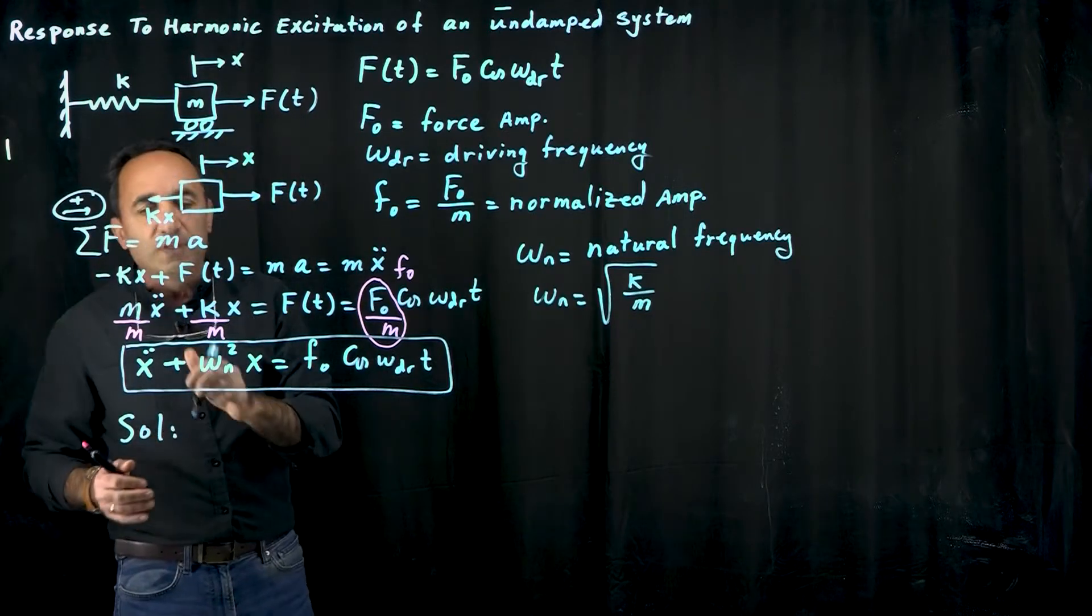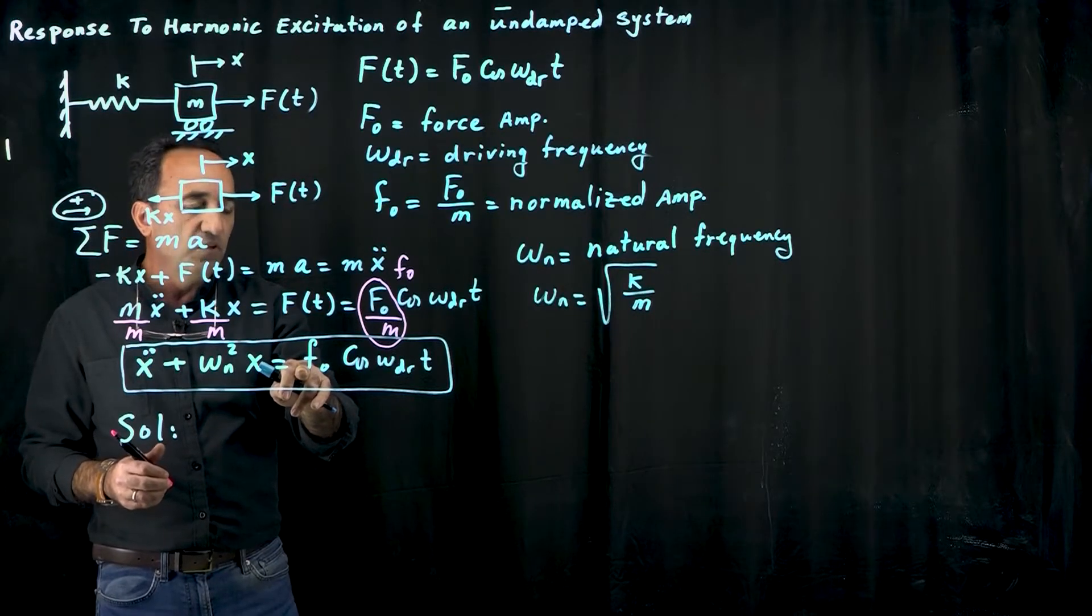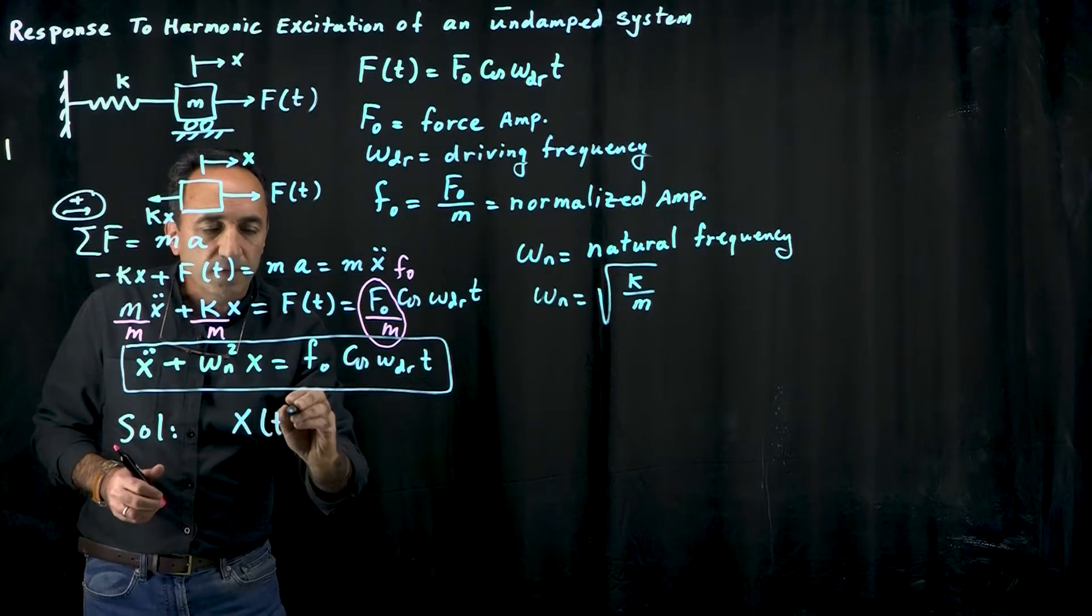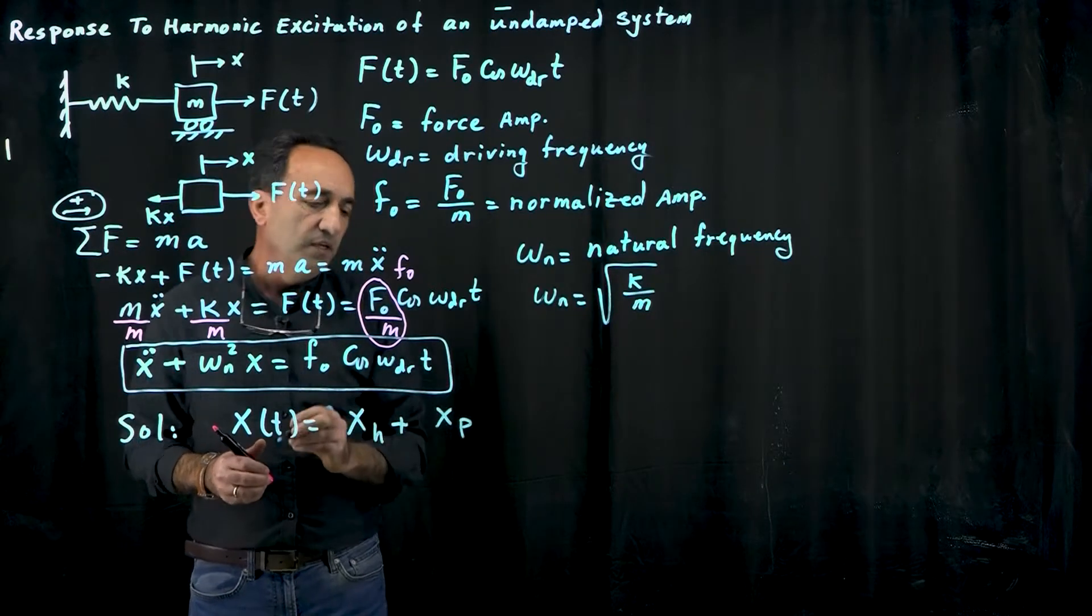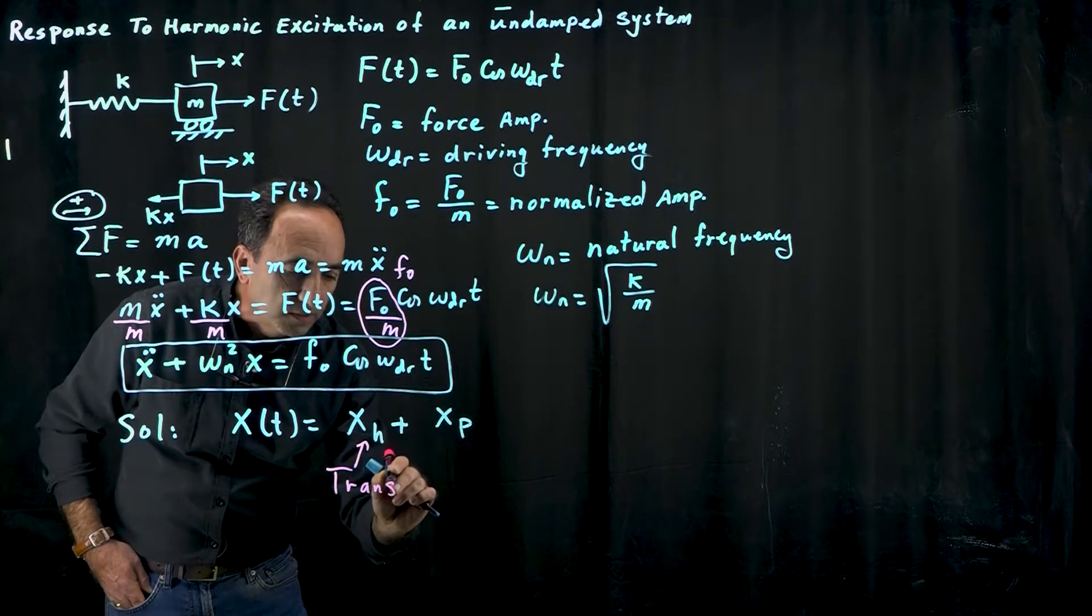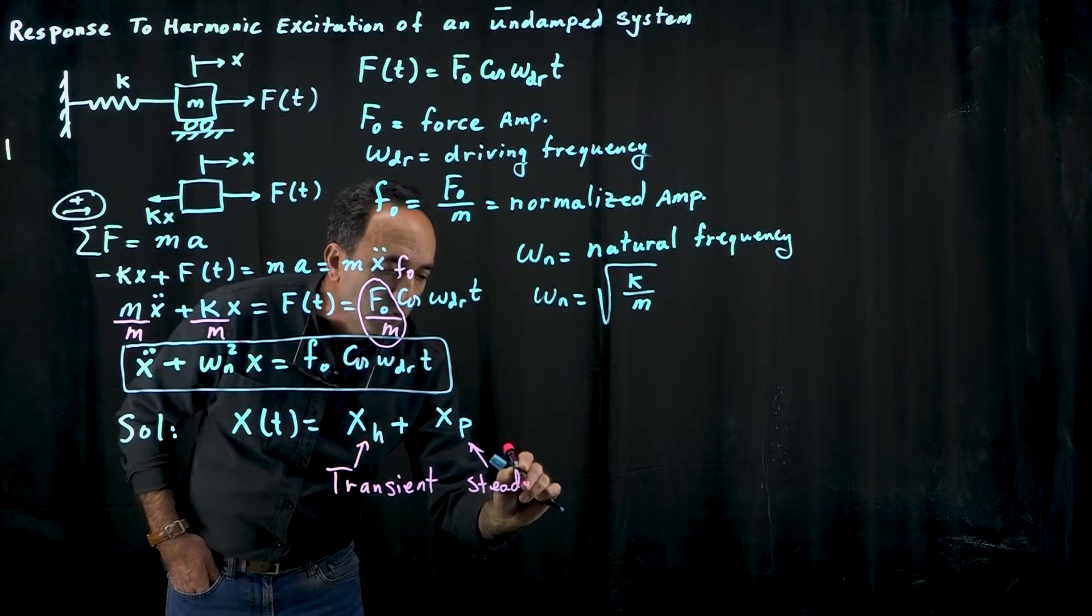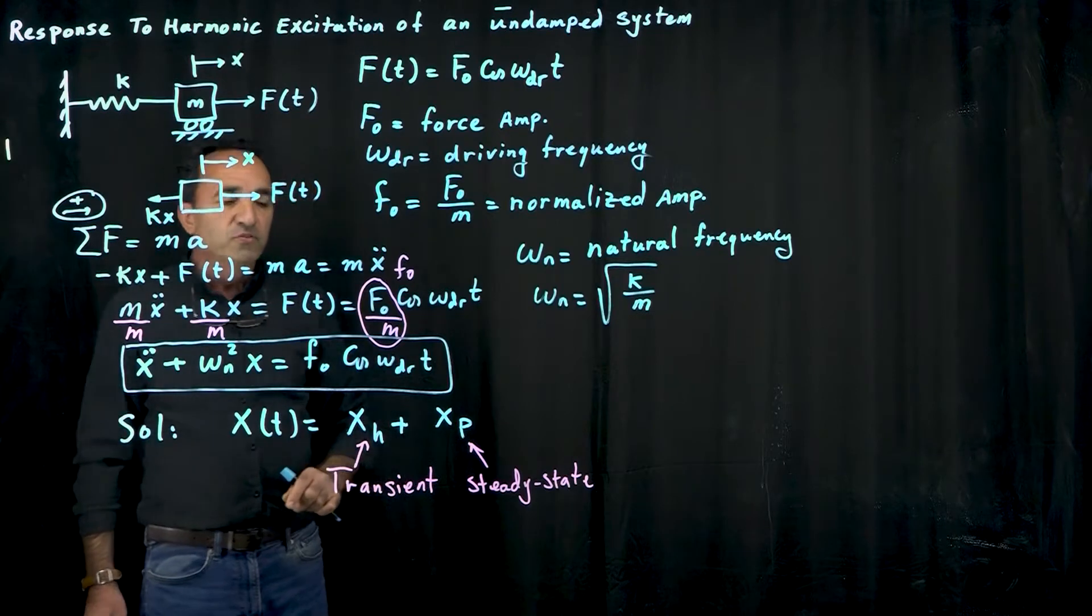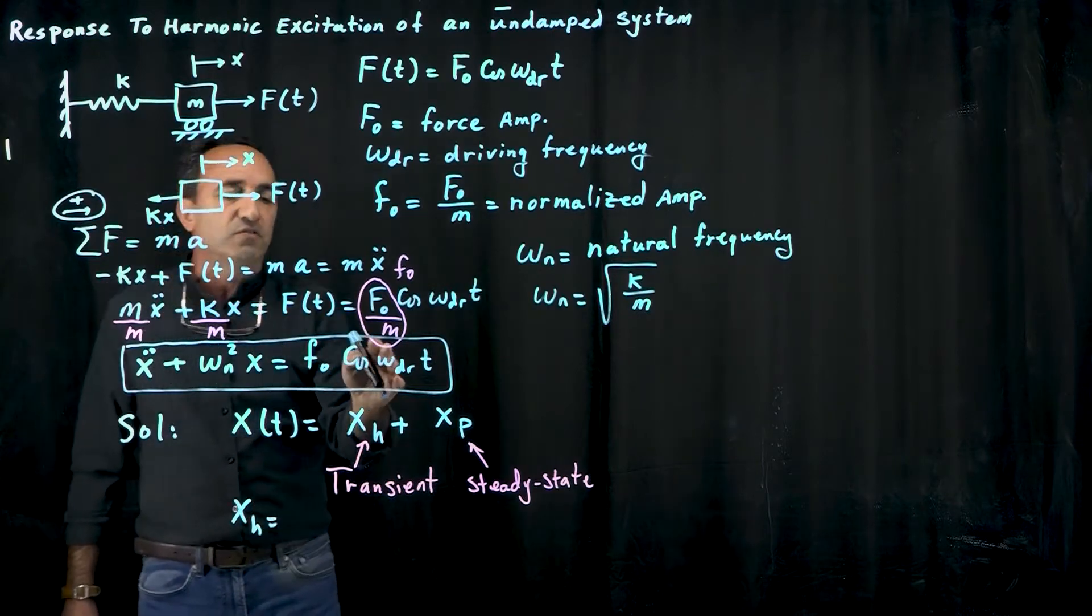What would be the solution to this differential equation? First of all, this is a second order differential equation because you have the second derivative and it's non-homogeneous because the right hand side is not zero. The solution is x as a function of time equals the homogeneous solution plus the particular solution. Homogeneous solution is also known as the transient solution, and particular solution is known as the steady state solution.